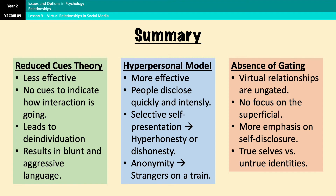Here is a brief summary of everything covered so far. You've got the reduced cues theory with the main bullet points, the hyper-personal model with its bullet points, and the absence of gating. Just to be clear, the absence of gating is not part of the hyper-personal model — it is simply another reason why online relationships are considered quite effective. Feel free to pause the video and have a look before moving on to the evaluation points.